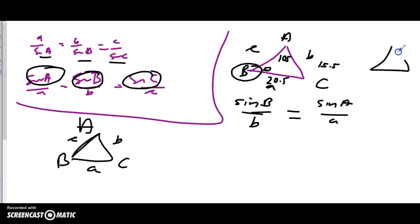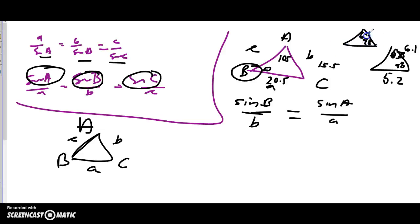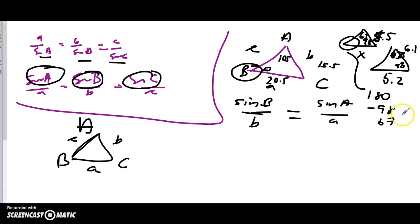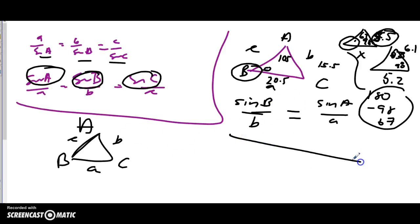Sometimes you don't have a complete pair. For example, if you have 98° and another angle like 63°, and you're missing the third angle, remember that the three angles of a triangle add up to 180°. So take 98 + 63 and subtract from 180 to get the third angle. Once you know two angles you know all three, and if you have a side then you can use sine law.